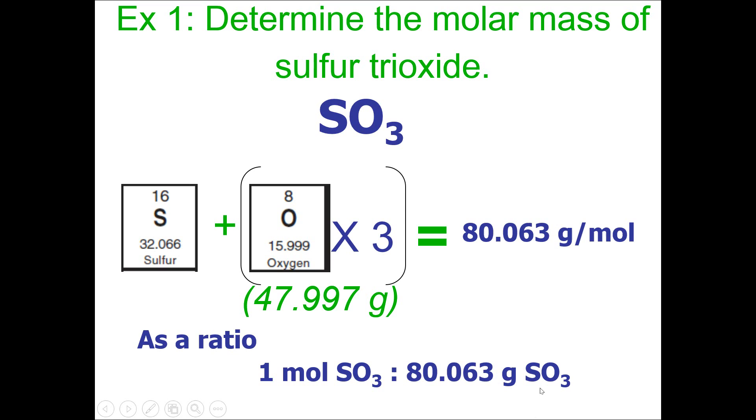It's really important that you're very thorough with the way you represent your ratios. And by thorough, I mean make sure that you have a unit of moles and a substance SO3 on one side of the equation, and on the other side, not equation, the ratio. On the other side of the ratio, you have grams and the substance SO3.